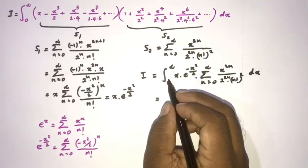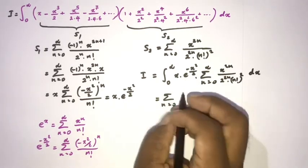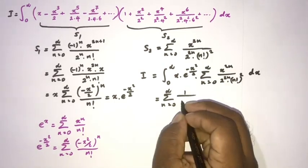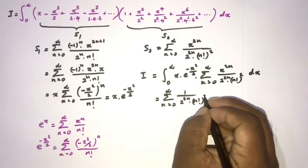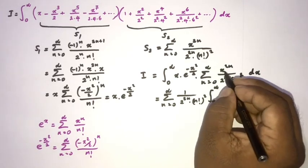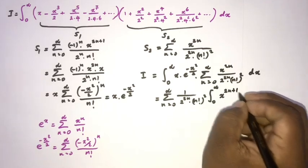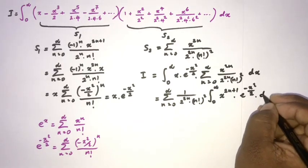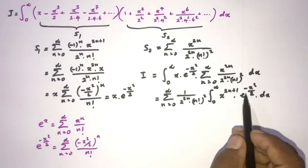We can switch the sigma notation and integral sign. So we have the sum from n=0 to infinity of 1 over 2^(2n) times (n!)², times the integral from 0 to infinity of x^(2n+1) times e^(-x²/2) dx.